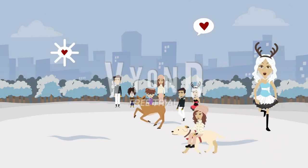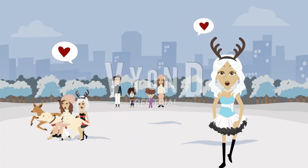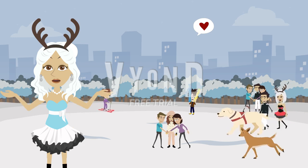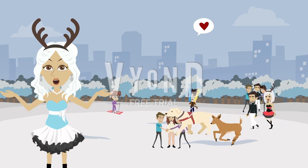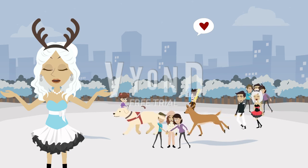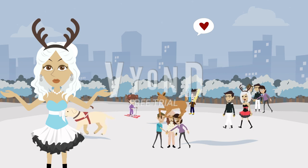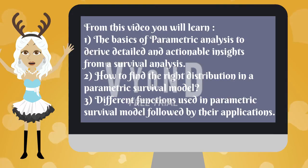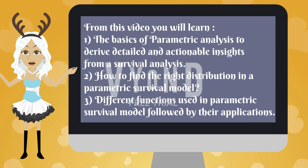I am glad to be with you today. Now let's get started. In a survival model, parametric methods are used to estimate survival time for grouped and censored data, including covariates, and apply them to data from a cohort of people, considering as outcomes the death from all causes and some specific causes, to drive detailed and actionable insights from a survival analysis.